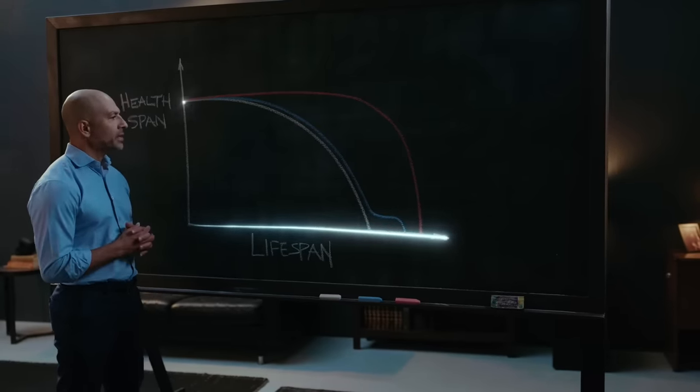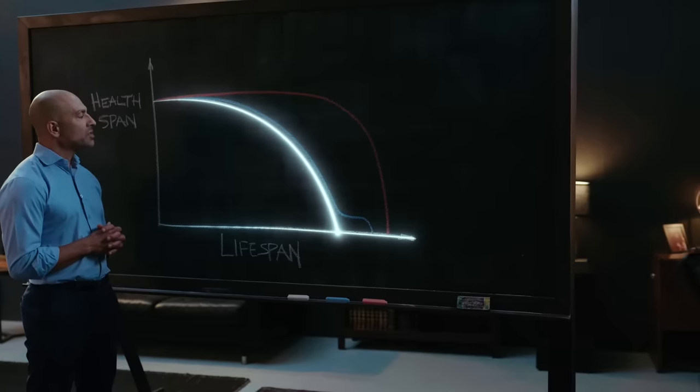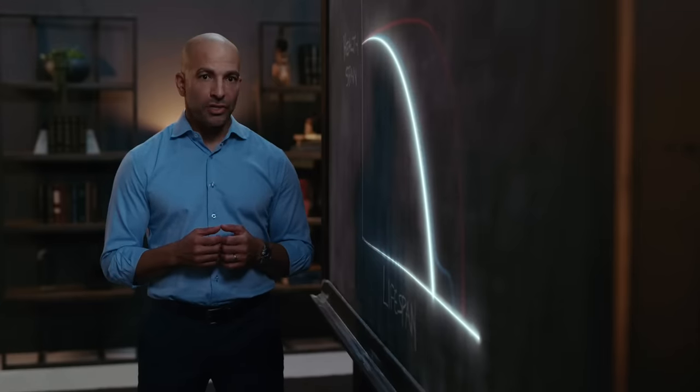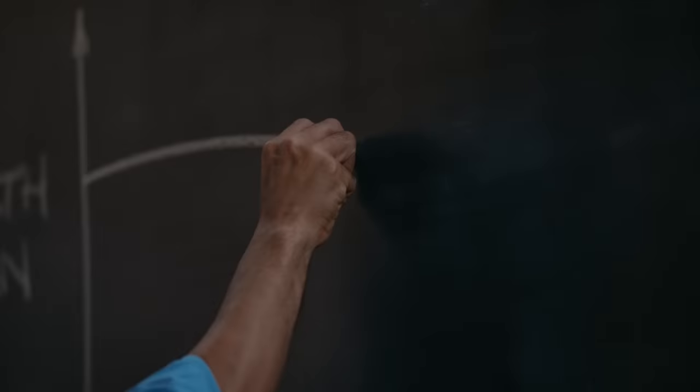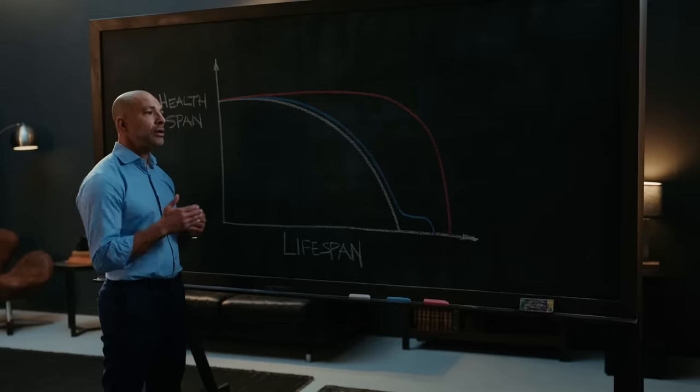Let's start by turning our attention to the white line. The white line represents what happens without much intervention as a person ages. A person is born here at time zero, and if you follow the trajectory of their graph, as it moves to the right you're gaining chronologic years.